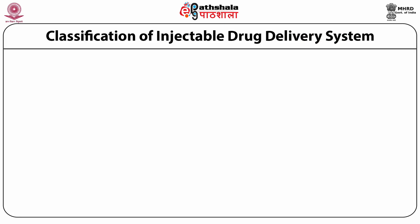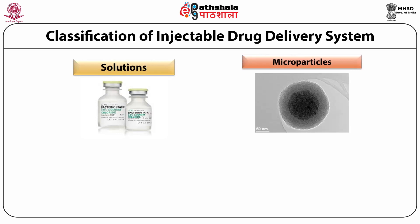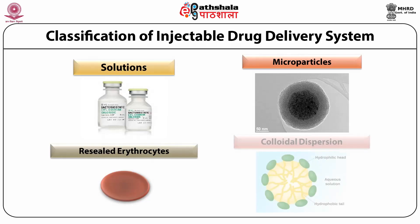The various types of injectable drug delivery systems include solutions, microparticles which can be suspended in a liquid or solvent and then injected, resealed erythrocytes loaded with drug or API, and a large variety of colloidal systems which can be given in the form of dispersions.